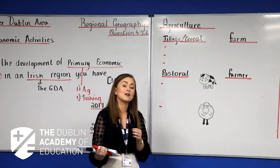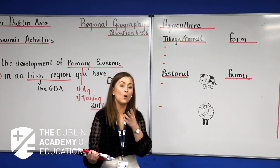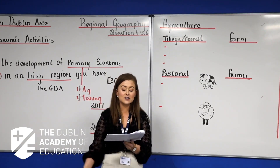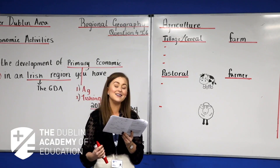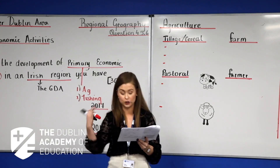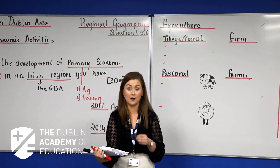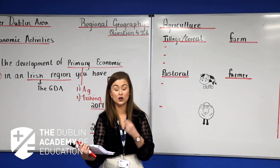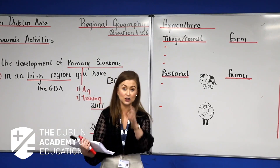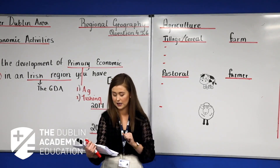The region has a mild climate — cool temperate oceanic — which favors the growth of high-yielding tillage crops, such as barley and wheat. Malting barley is grown for the brewing and distilling industry — for example, Guinness. Protein-rich barley is used as animal feed.